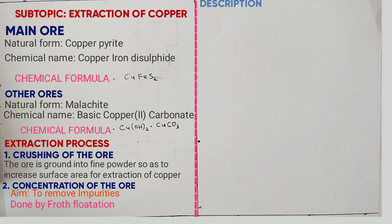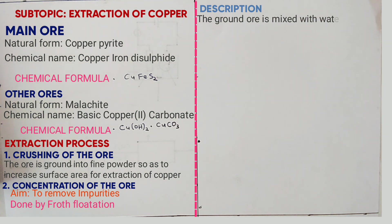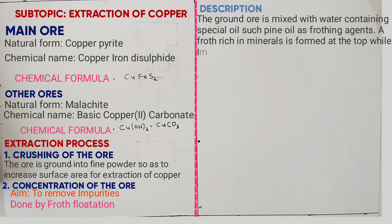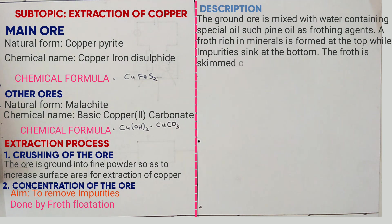The description of the froth flotation process is as follows: the ground ore is mixed with water containing special oil such as pine oil as flotation agents, whereby the oil dissolves the minerals while water dissolves impurities. The froth that forms is rich in minerals and floats to the top, while water and impurities sink to the bottom. The froth is skimmed off and dried.